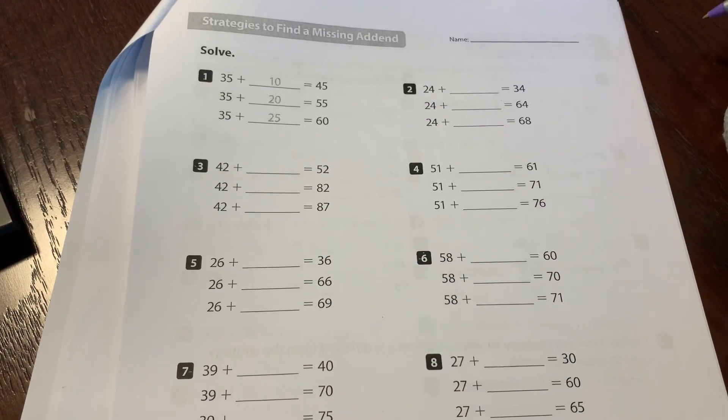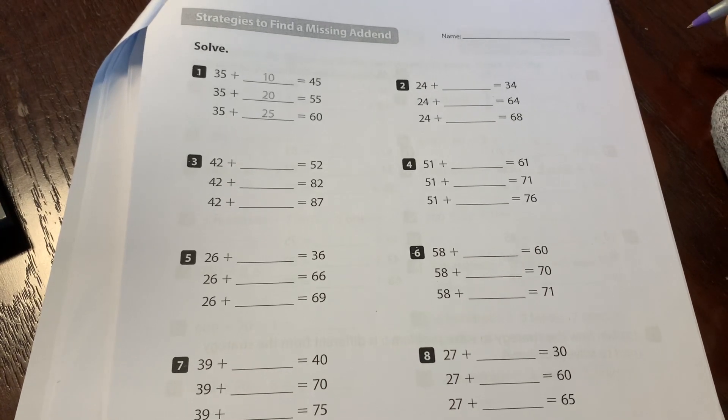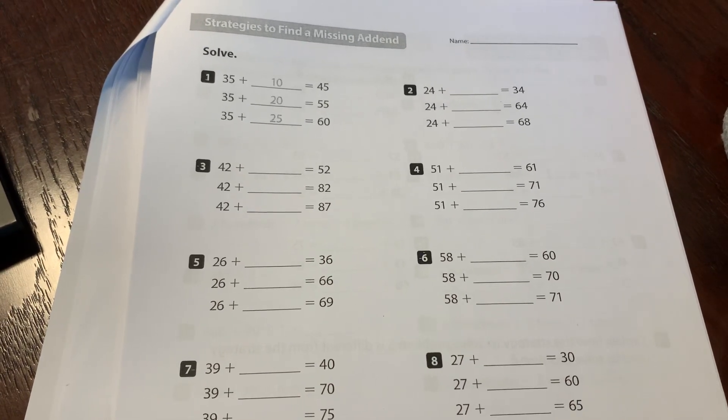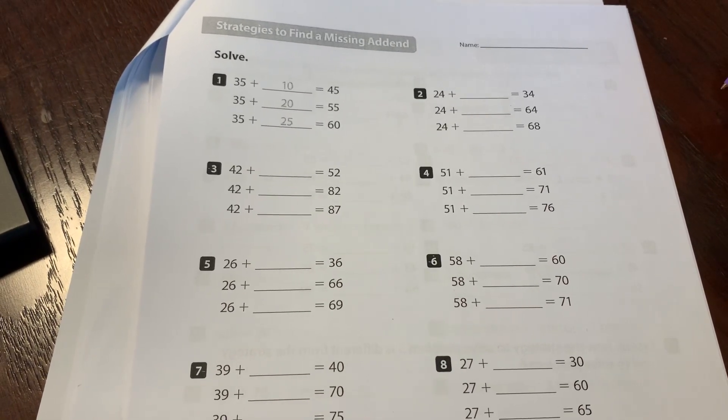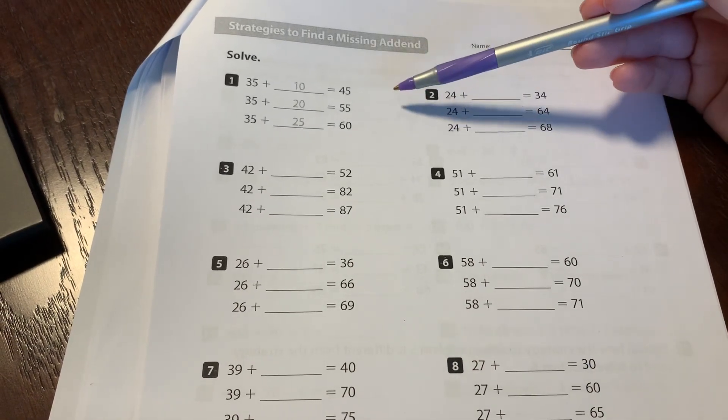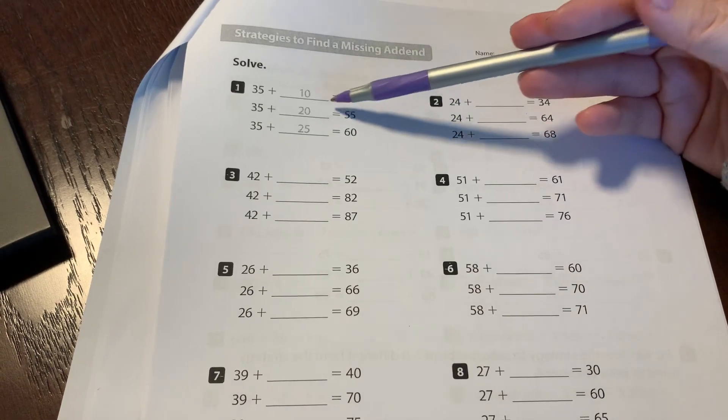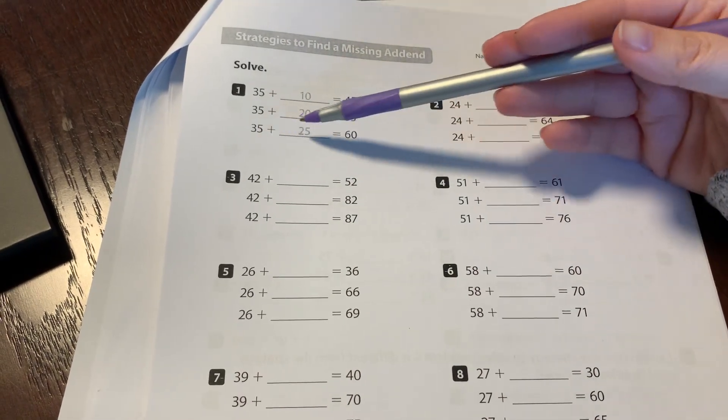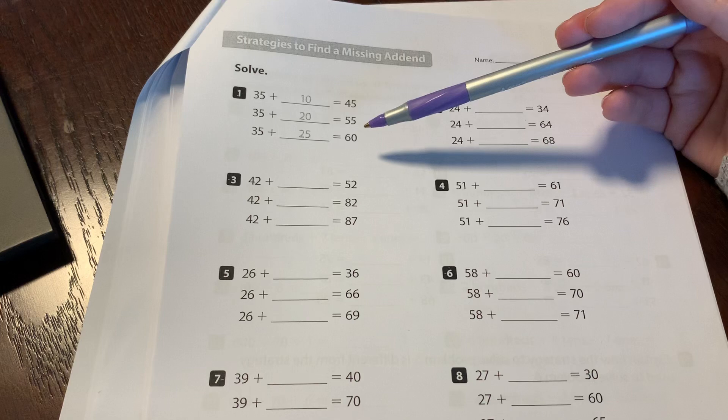So I just wanted to go over a few strategies. Most of you will find this concept not too difficult. However, I did want to just review a few strategies with you. So let's look at example number one. In this example, they all the numbers started with 35 and they were adding a number to get to a larger number.